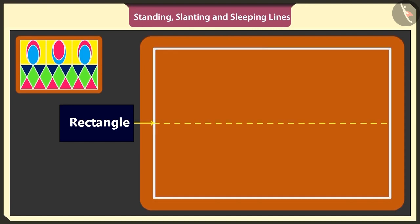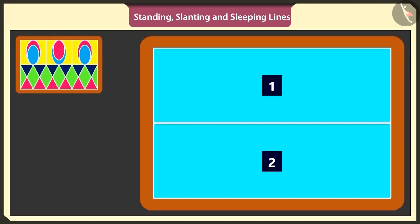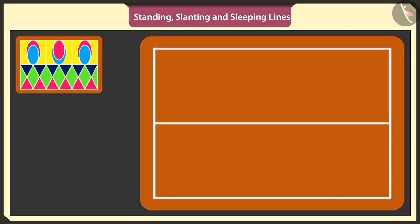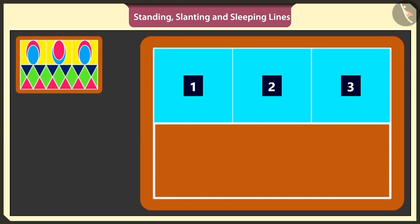In the middle of the rectangle I will draw a sleeping line, like this. Yes, now we have two rectangles. Draw two standing lines in the above rectangle and make three such small squares.